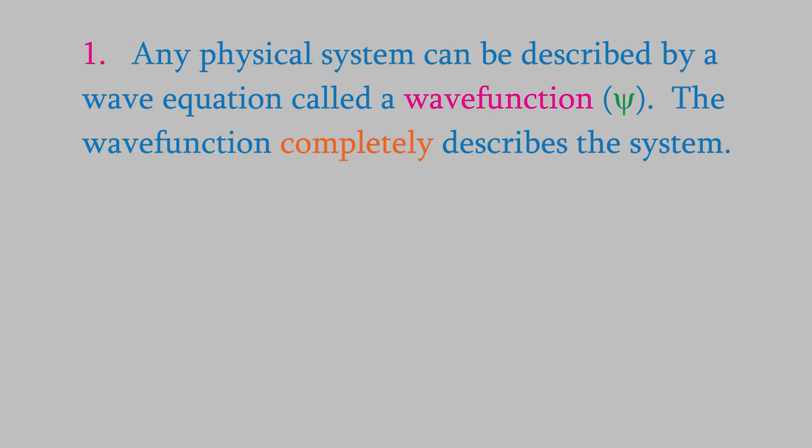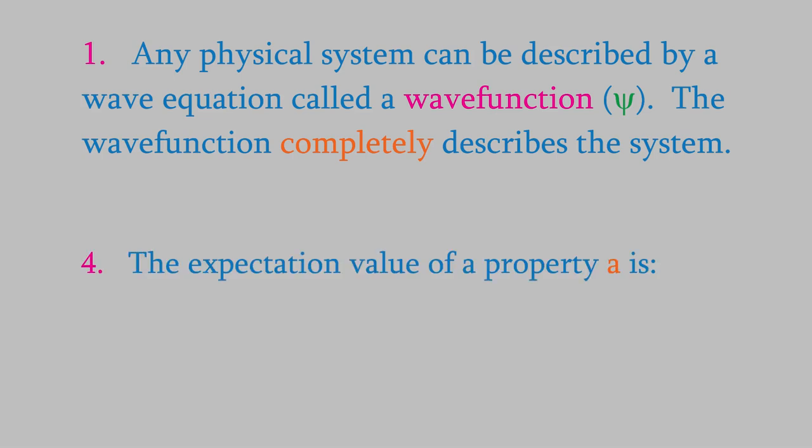So how do we actually use the wave function to get that information? The fourth postulate tells us that if we want to know a property for a system, we get it using this equation, where â is the operator for the property a that we're interested in. For example, suppose the property we're interested in is the position of the system. In that case, we'll plug the operator for the position into this equation.